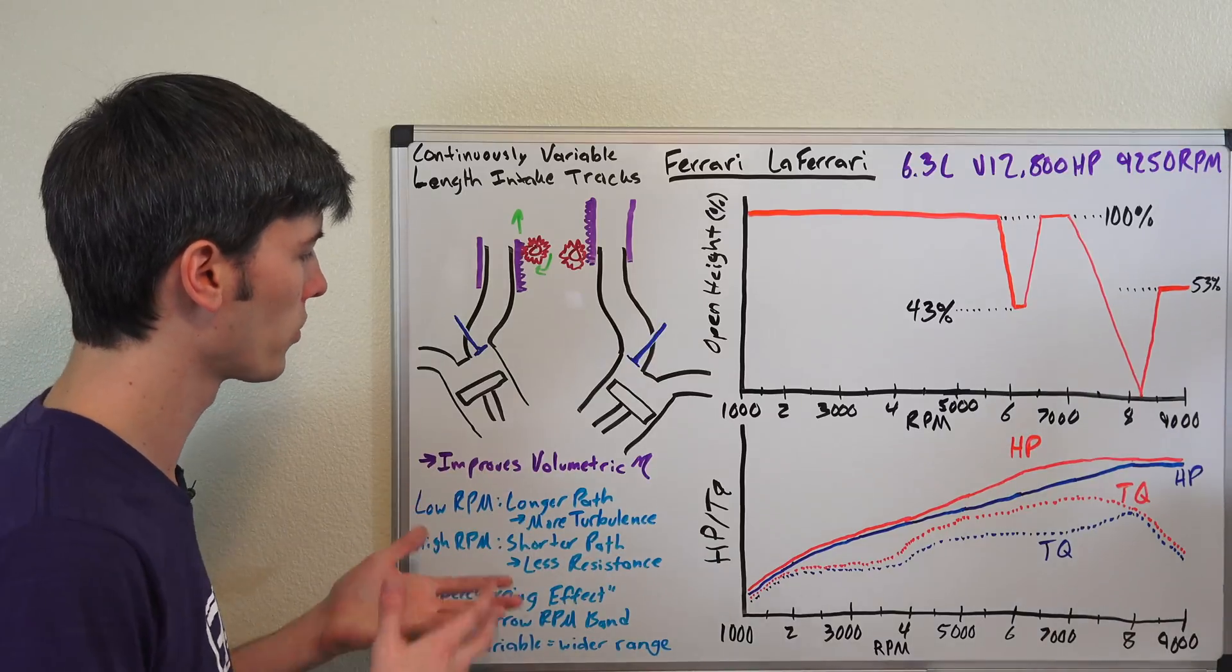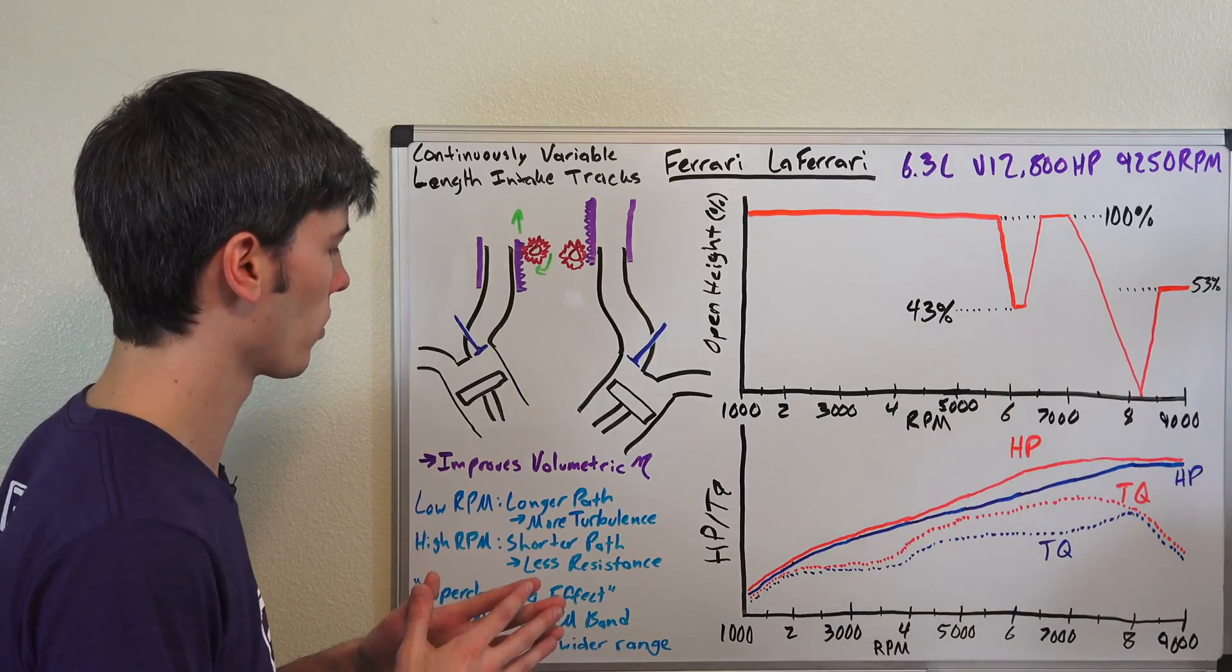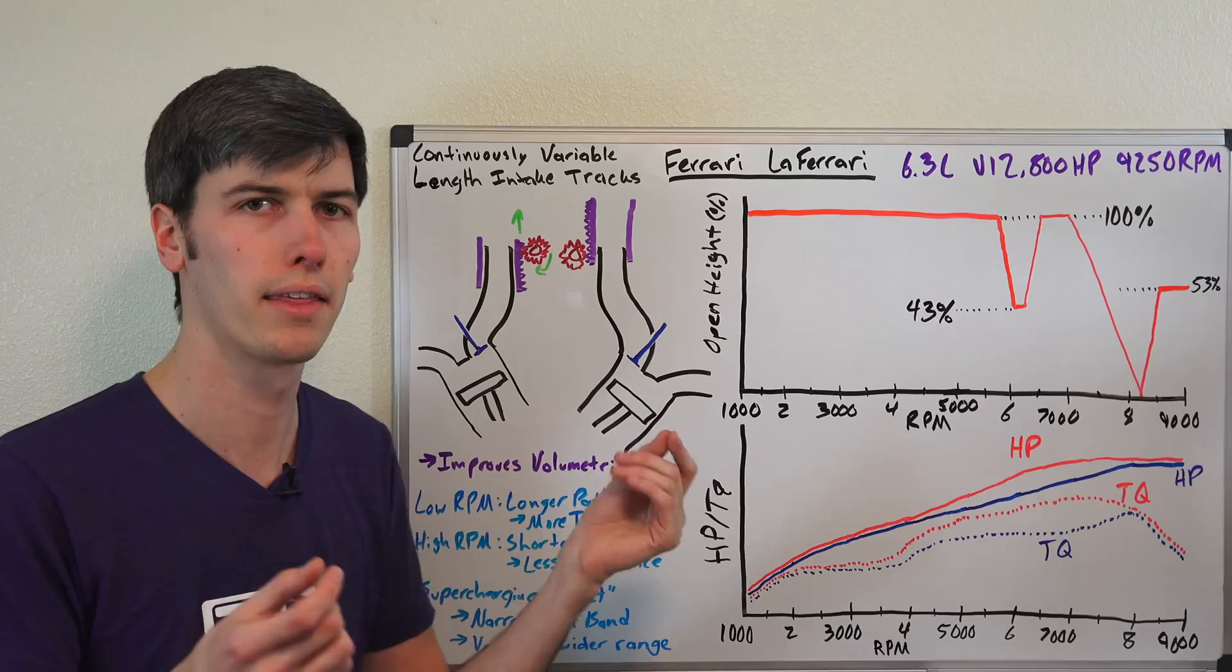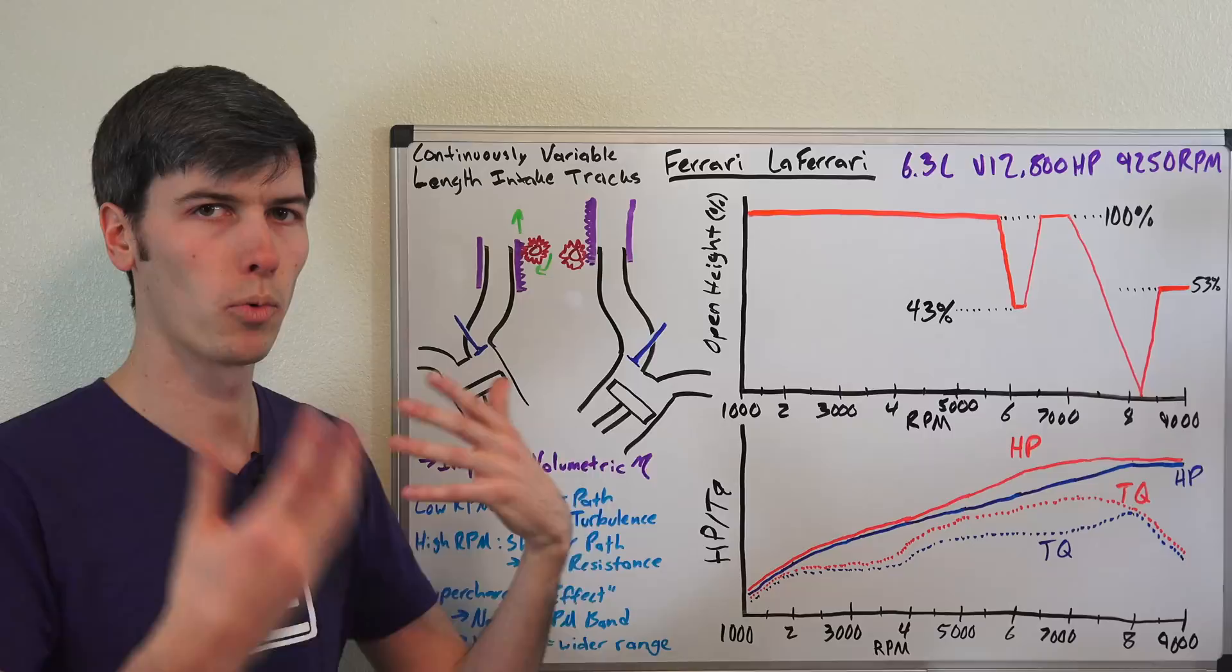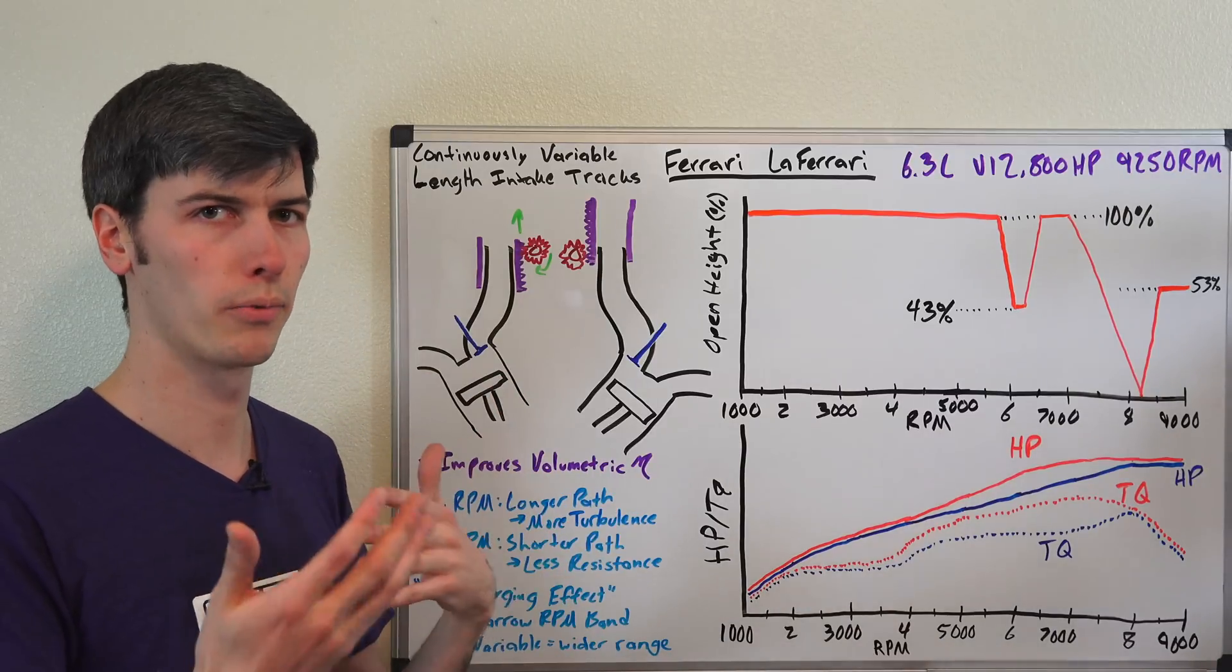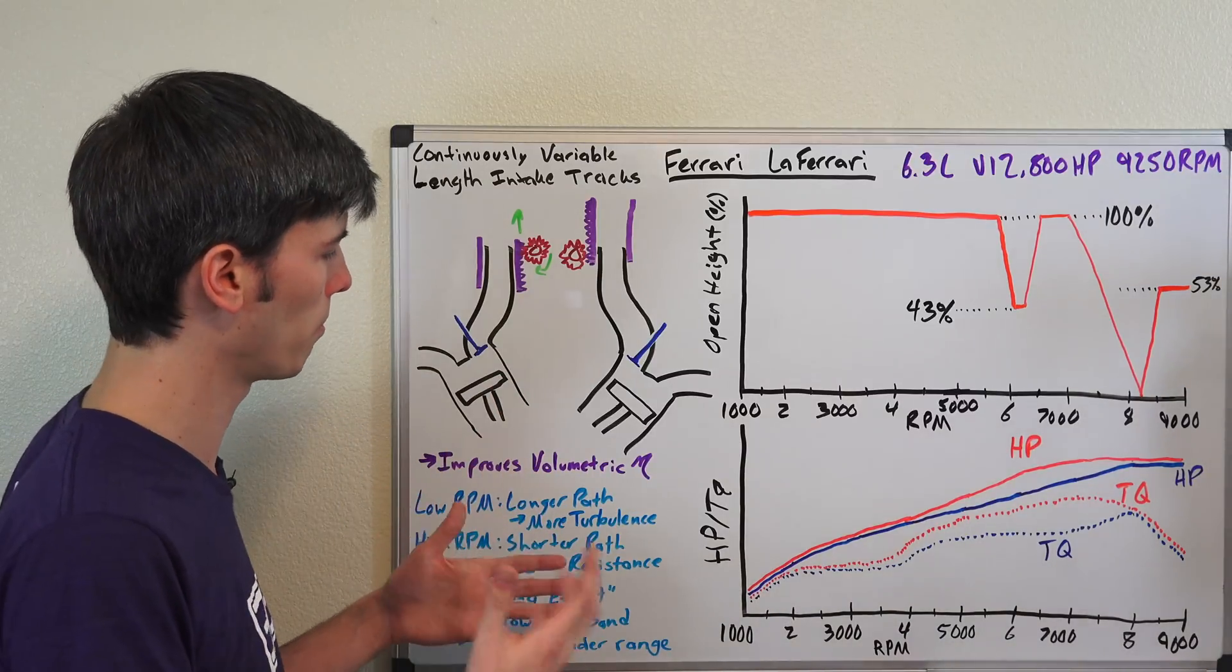So at low rpms, one thing you may want to take into consideration is that if you have a longer path, that airflow is going to tend to speed up and that's going to make it more turbulent, and that's going to have a better air fuel mixture so you can get more efficient combustion.